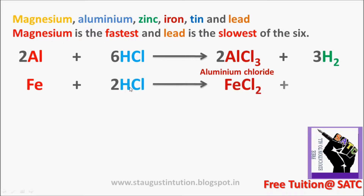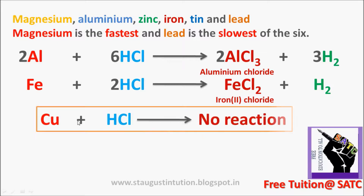Iron plus hydrochloric acid forms iron chloride plus hydrogen. Copper, however, does not react with hydrochloric acid — no reaction. This is very important: copper does not react with any acid.